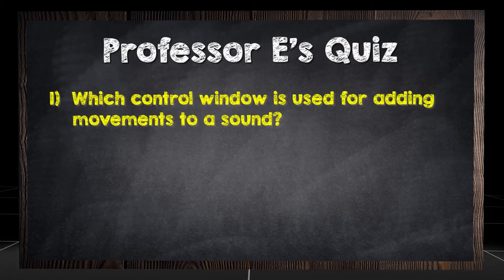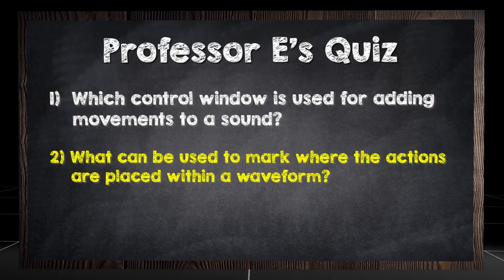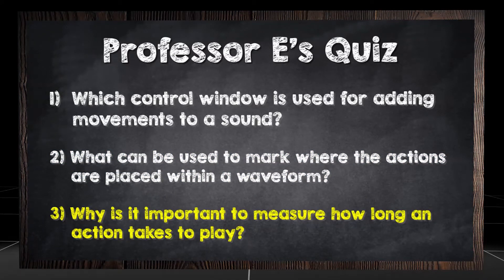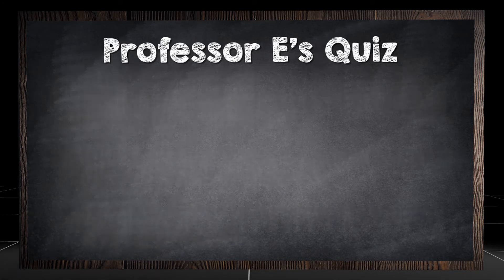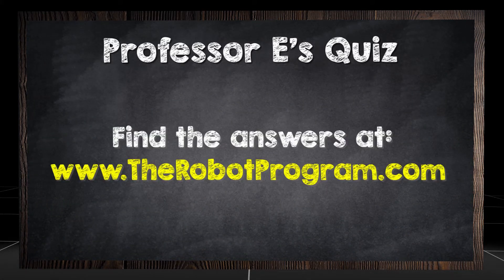Quiz questions: Which control window is used for adding movements to a sound? What can be used to mark where the actions are placed within a waveform? Why is it important to measure how long an action takes to play? Find the answers at therobotprogram.com.